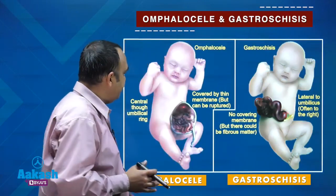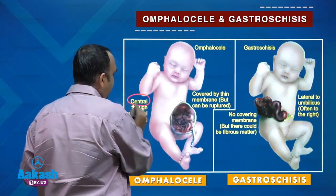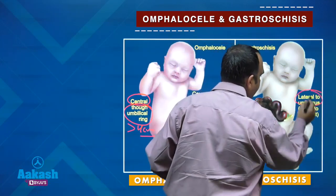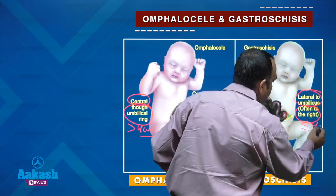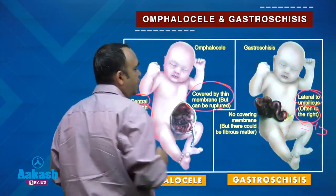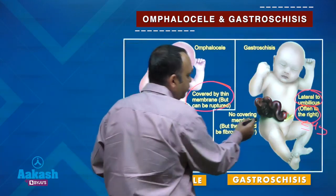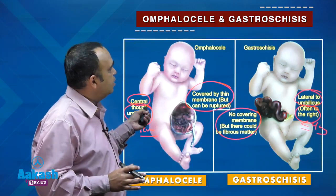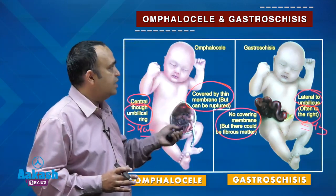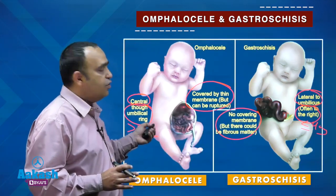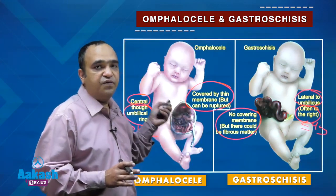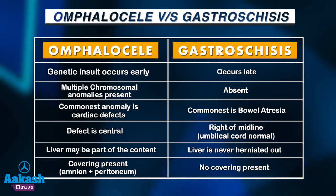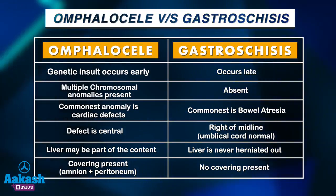To summarize the major differences: in omphalocele the defect is central through the umbilical ring and more than 4 centimeters, whereas in gastroschisis the defect is lateral — right of the umbilical cord — and less than or equal to 4 centimeters. In omphalocele, herniated contents are covered with a membranous sac; in gastroschisis there is no covering and the viscera are exposed. Additionally, liver or spleen herniation can occur in omphalocele but not in gastroschisis, and omphalocele carries a 50–60 percent risk of associated congenital anomalies compared to less than 10 percent in gastroschisis.